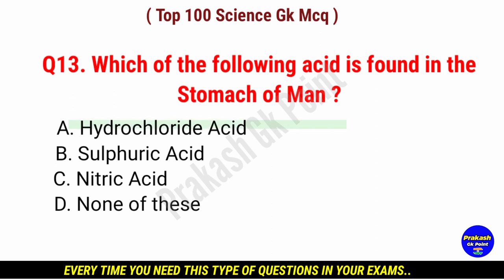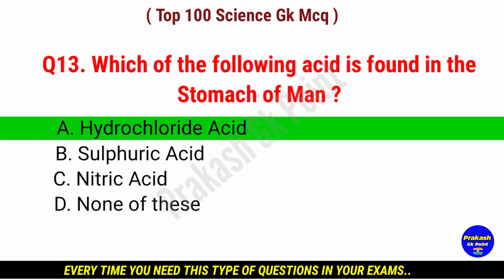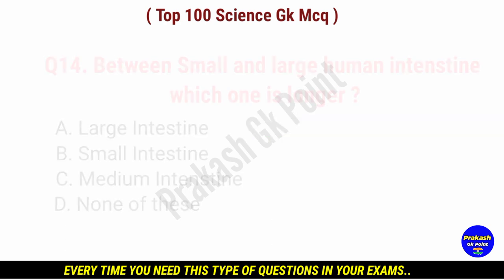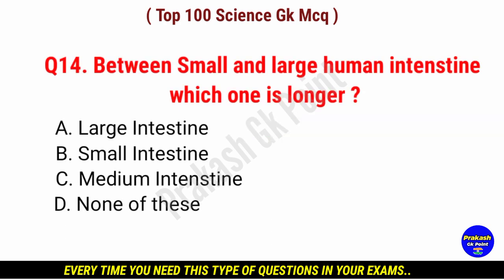Which of the following acid is found in the stomach of man? Answer: option A, hydrochloric acid.